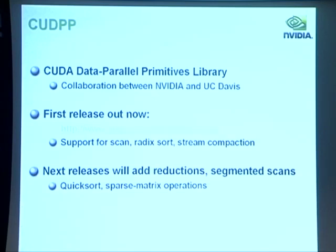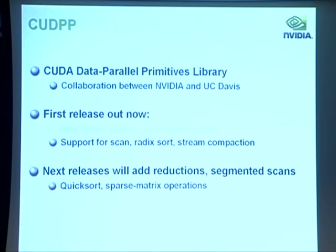I want to mention CUDPP — the CUDA Data Parallel Primitives library — a collaboration with UC Davis, John Owens, and Shubhas Gupta. It was just released and is available on gpgpu.org. It currently supports scan, radix sort, and stream compaction as described in the GPU Gems 3 article. It's a beta release so the interface will change — don't use it for serious code yet. We'll be finalizing the interface and adding features like reductions, segmented scans, and examples of quicksort.